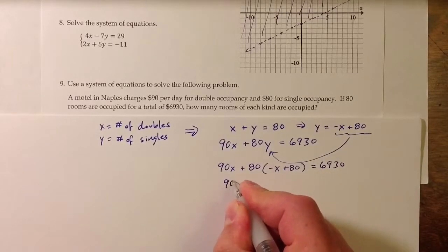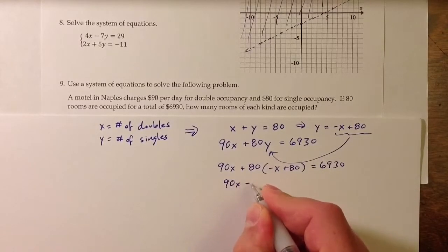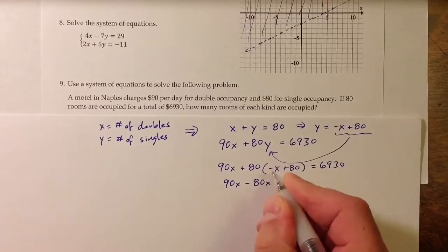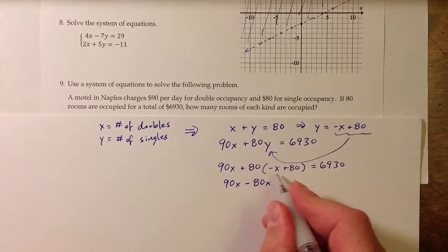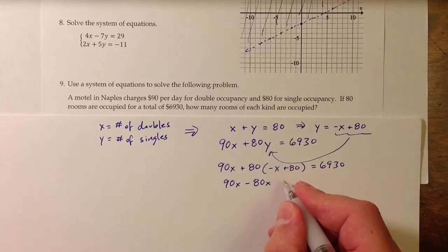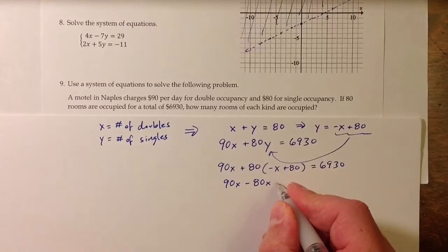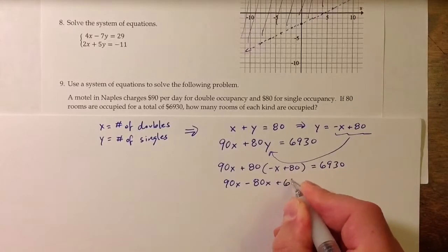So we get 90x minus 80x, distributing the 80. 80 times 80, well, 8 times 8 is 64. So 80 times 80 is 6400.